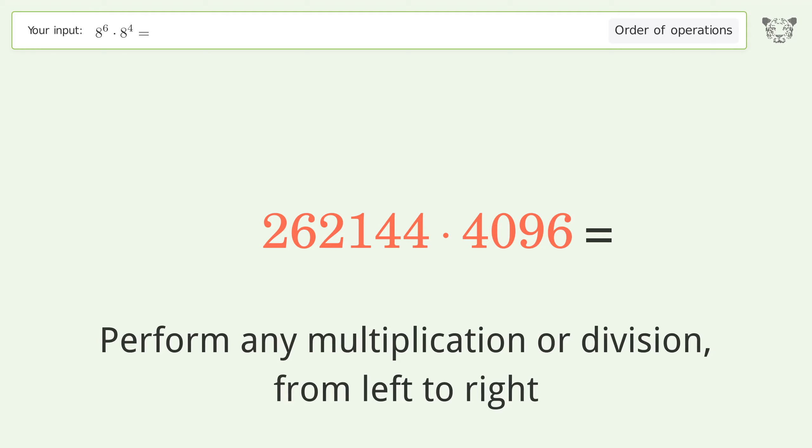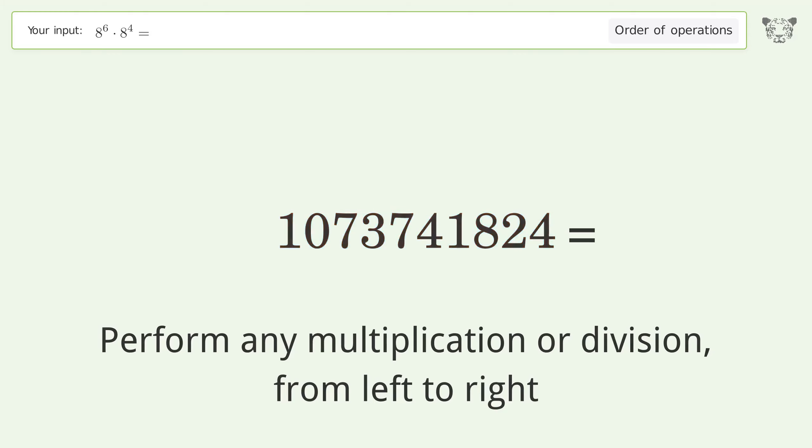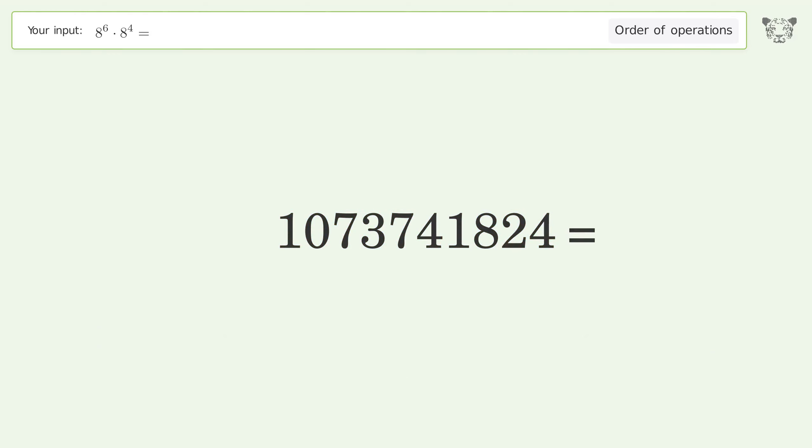262,144 times 4,096 equals 1,073,741,824. And so the final result is 1 billion, 73 million, 741,824.